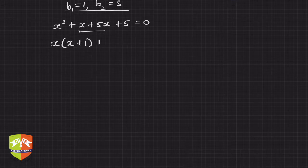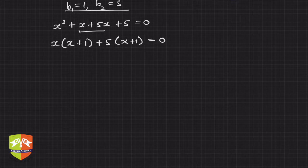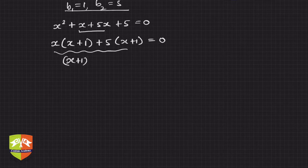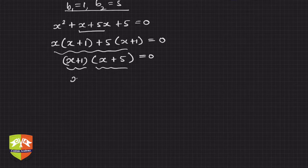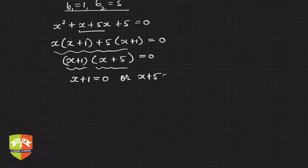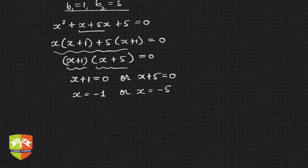Now we take x common from the first two terms, giving x(x + 1), and take 5 common from the other two terms, giving 5(x + 1). This equals 0. We then take (x + 1) common from both terms, reducing it to (x + 1)(x + 5) = 0. We have two factors, and their product is zero only when either x + 1 = 0 or x + 5 = 0.